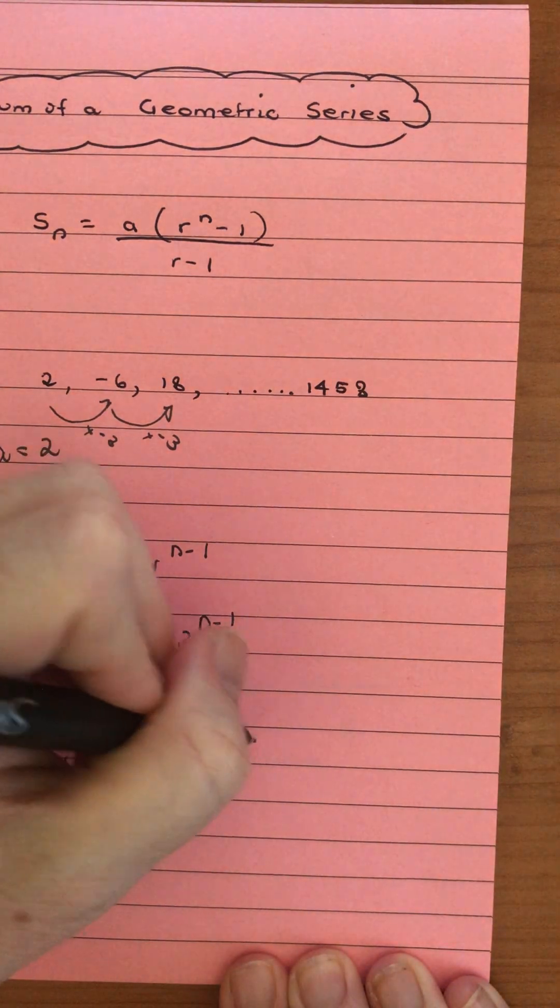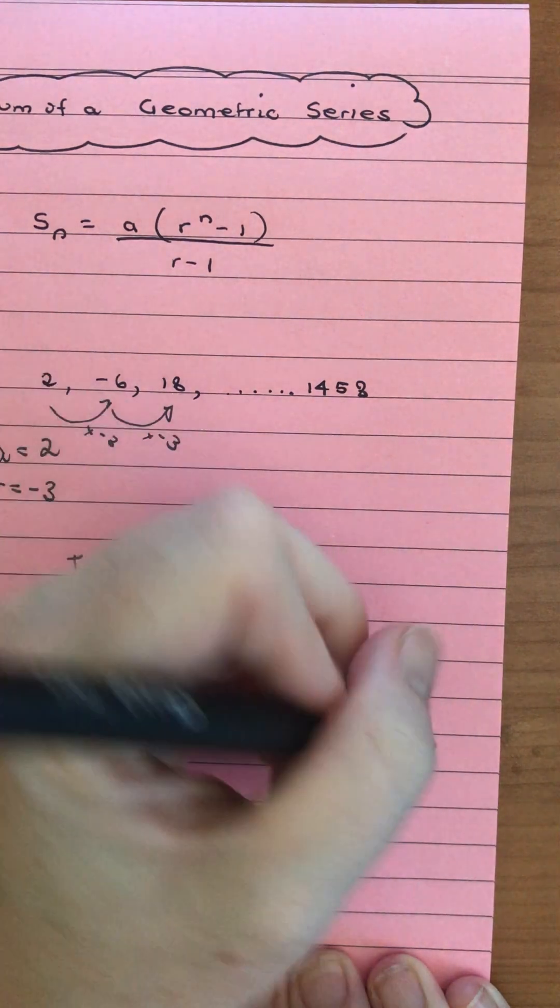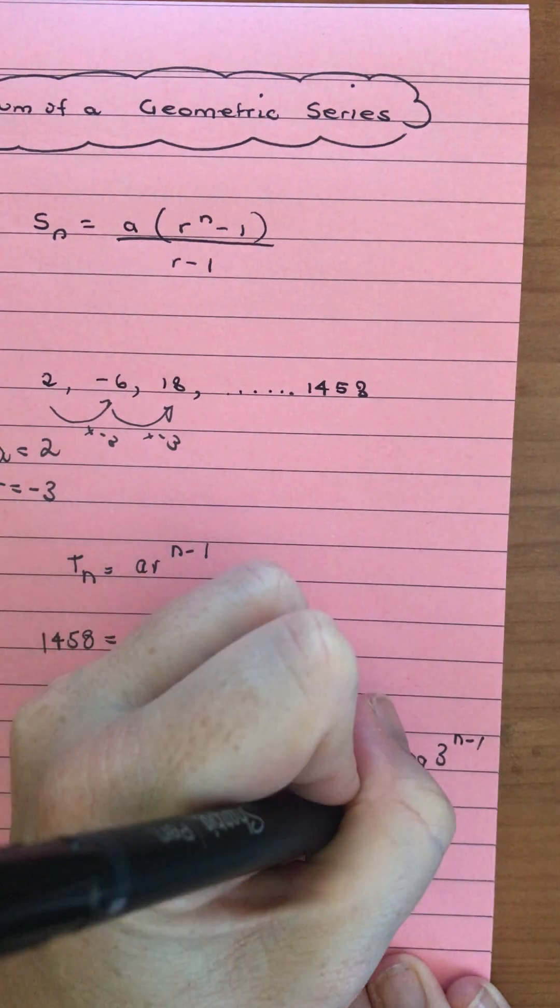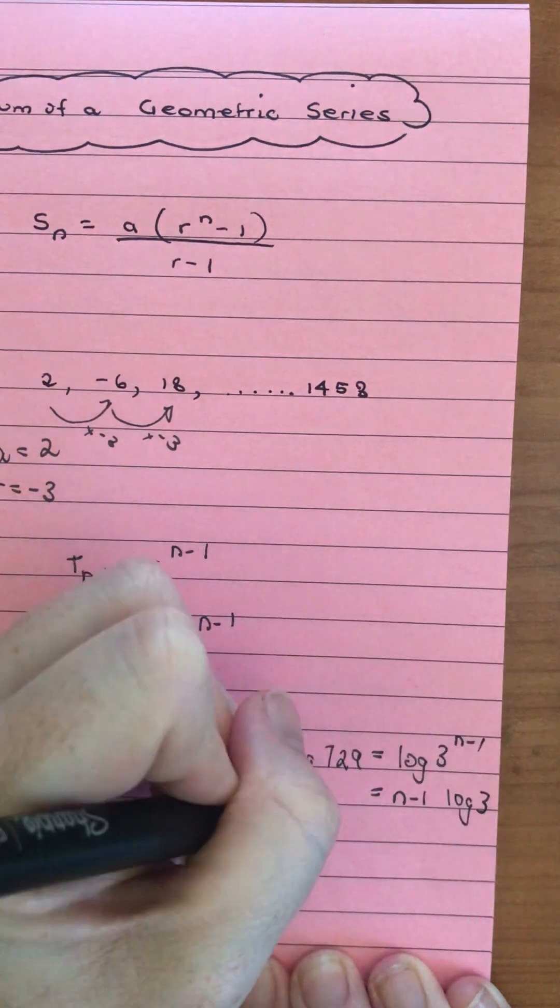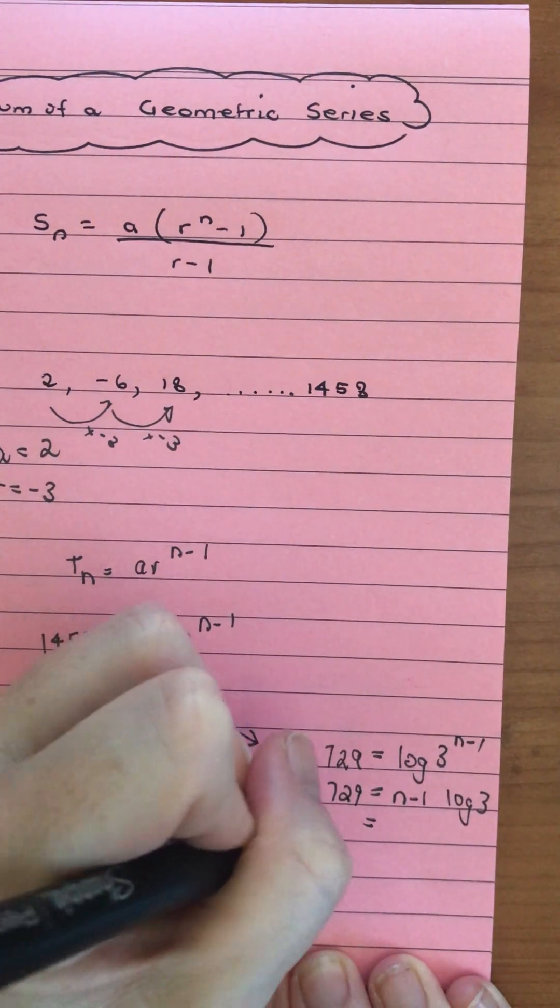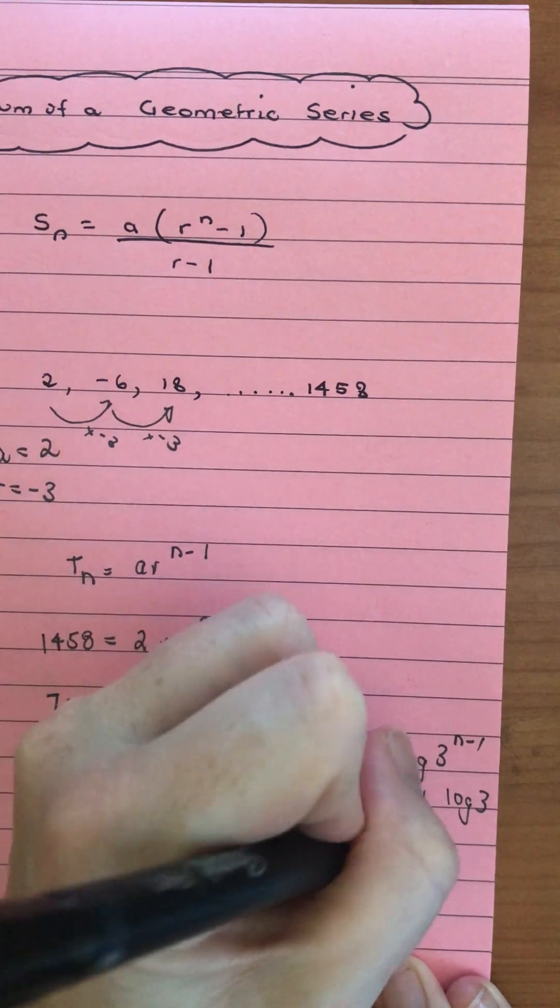So that means over here we would say log of 729 is equal to log of 3^(n-1). That enables us to bring down the n-1. And then we would have log of 729 over log of 3, and that will be our n-1.